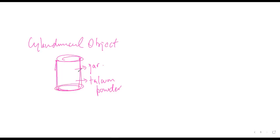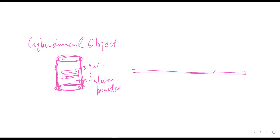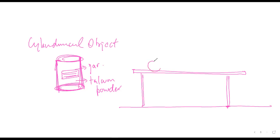If you take a talcum powder container or any medicine bottle — these usually come in cylindrical shape — the activity you need to do is on your table. Put the cylindrical jar like this on the table. Satya, have you understood? Yes sir. That cylindrical medicine bottle lies on the table like this. Now what you do is you mark a point here. Have you understood? Yes.